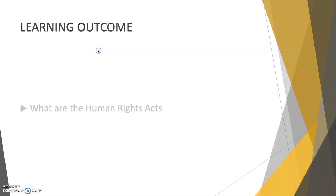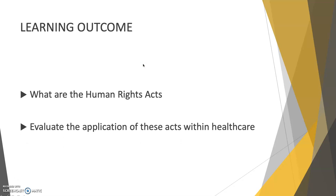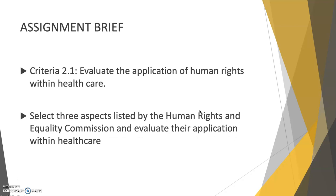Our learning outcomes are to know where the Human Rights Act is and evaluate the application of the Human Rights Act within healthcare. The assignment brief criteria 2.1 says evaluate the application of human rights within healthcare. Select three aspects listed by the Human Rights and Equality Commission and evaluate their application within healthcare. I want you to look at human rights that are relevant within healthcare and discuss how these human rights can be applied — what it looks like when we adhere to and apply human rights within healthcare.